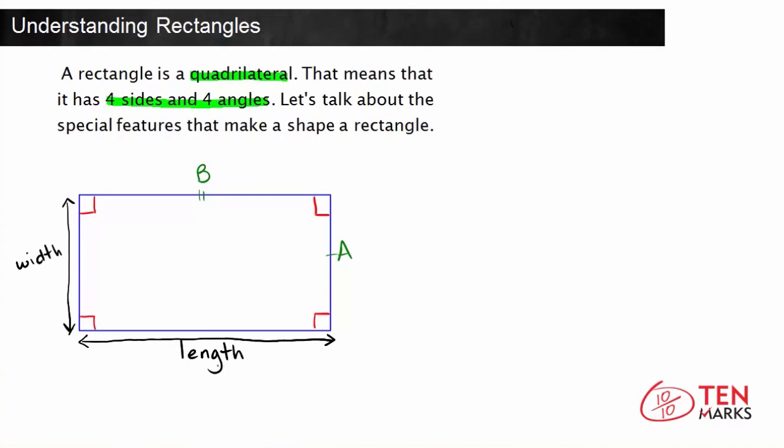So the length and width of a rectangle are made up of two of the sides, right? Because we know the width is going to be equal to the other width over here, and the length is going to be equal to the top of this rectangle as well. So that's why we can define a rectangle by length and width.